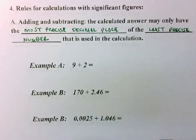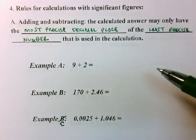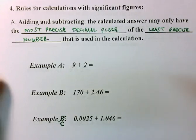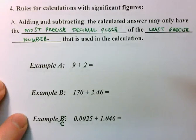So here I have three examples, and this should say example C right here. Here I have three examples, and in each of these examples I have an addition problem, so I'm going to use this rule for each of these calculations.